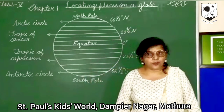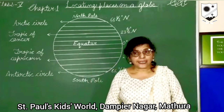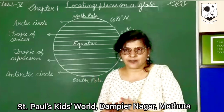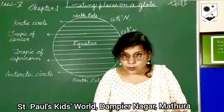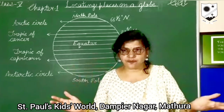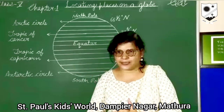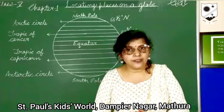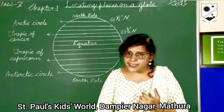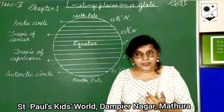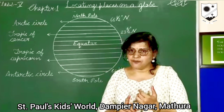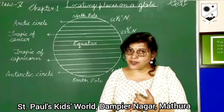Now as we know, the earth is huge, and if we want to tell someone the location of a place on this vast sphere, how will we do it? So one of the easiest ways to give the exact location of a place is with the help of a grid.